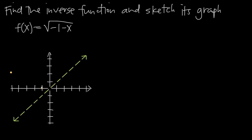If we connect these two points and sketch the rest of the graph, we get a curve that looks roughly like this. This is our function f of x.